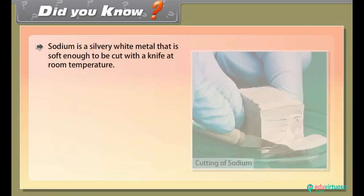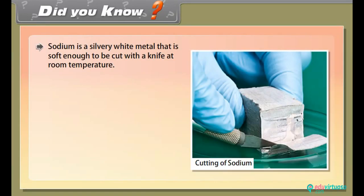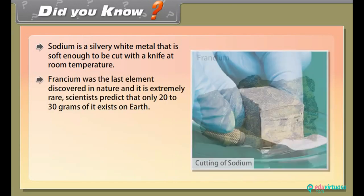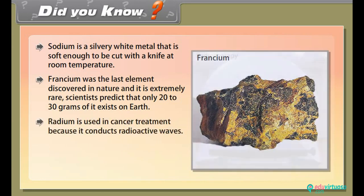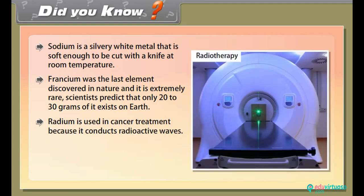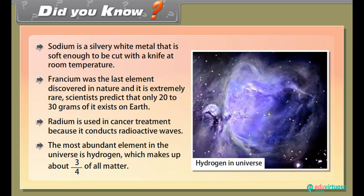Did you know: Sodium is a silvery white metal that is soft enough to be cut with a knife at room temperature. Francium was the last element discovered in nature and it is extremely rare. Scientists predict that only 20 to 30 grams of it exists on earth. Radium is used in cancer treatment because it conducts radioactive waves. The most abundant element in the universe is hydrogen, which makes up about three-fourths of all matter.